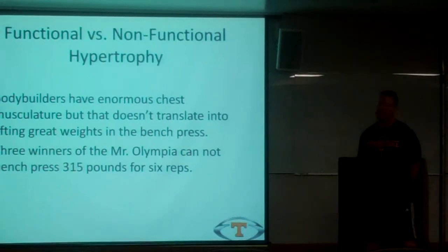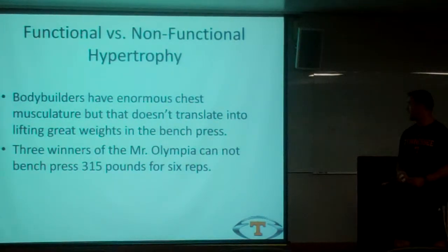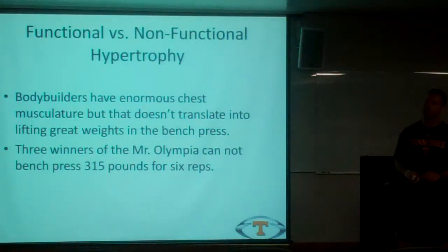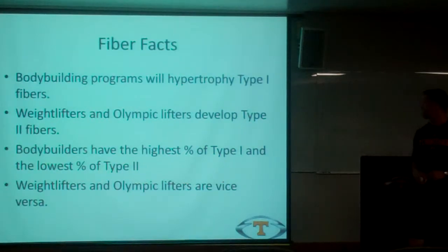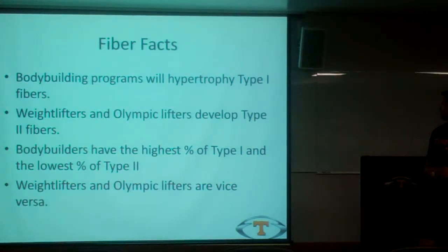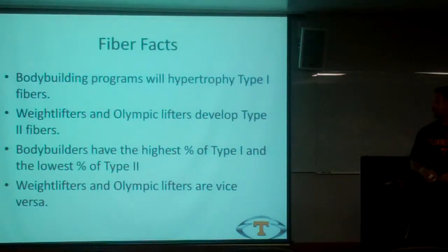Going to the application — the translation of what to do in the weight room and how to translate it to the field. Poliquin said that he knew six bodybuilders, Mr. Olympia-level, who could not bench press 315 more than six times. So, yeah, you want to get big, but does it produce any translation for your athletic performance? Basic power tracks: bodybuilding typically involves type 1 fiber hypertrophy, while weightlifters and Olympic lifters work type 2. Different percentages of bodybuilding compared to weightlifters and Olympic lifters — type 1 hypertrophy in your bodybuilders, type 2 in your weightlifters and Olympic lifters.